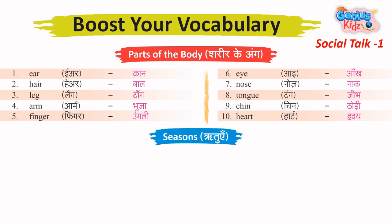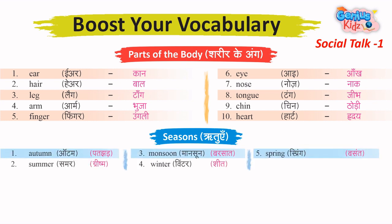Seasons – Ritue. 1. Autumn – Pajhad. 2. Summer – Grishm. 3. Monsoon – Barsat.